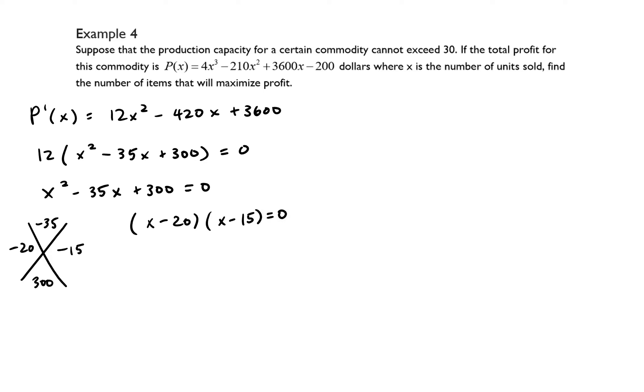is equal to zero, and if we use the zero product principle we end up getting that x is equal to 20 and x is equal to 15.